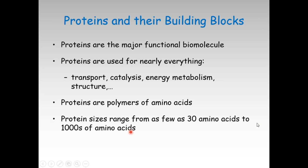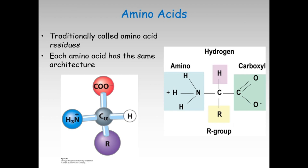What are amino acids? Amino acids are compounds that have both an amine group as well as an acid functionality, hence the name amino acids. Traditionally, they are called amino acid residues when they are on a protein. Each amino acid has the same architecture, and there are 20 naturally occurring amino acids. All 20 of these amino acids are alpha amino acids, which means they have an alpha carbon with a carboxyl group—which is why they're called acids—and an amino group bonded to this alpha carbon.